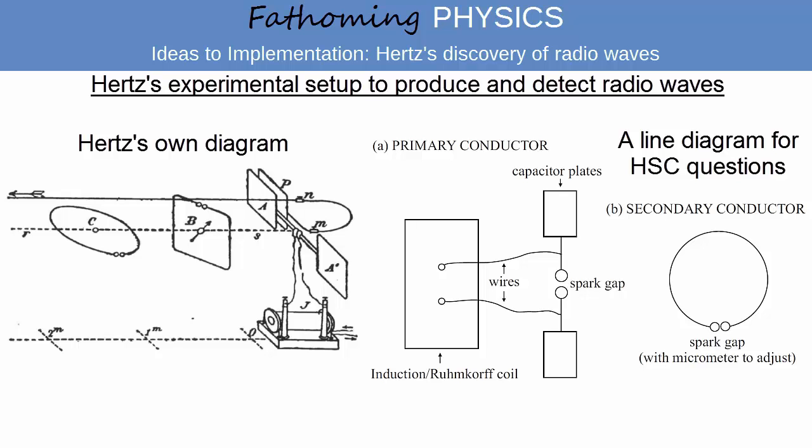As the sparking across the gap in the primary conductor consists of a flow of charge oscillating rapidly in direction, electromagnetic waves are generated at the spark gap, with a frequency which was determined by the design of the circuit, that is, its inductance and capacitance. Hertz estimated this frequency to be 100 million cycles per second, or in modern terminology, 100 megahertz.